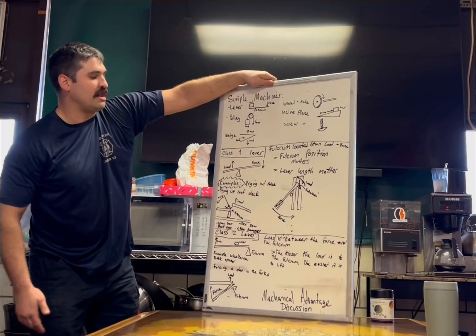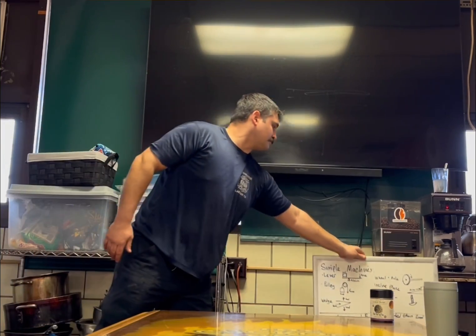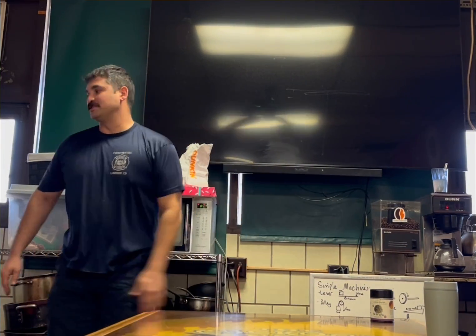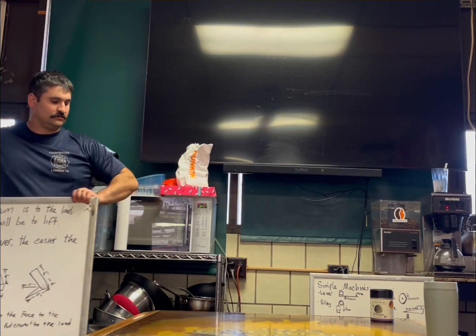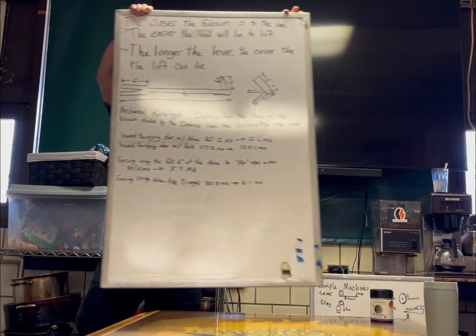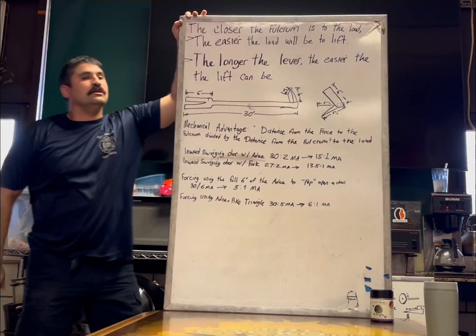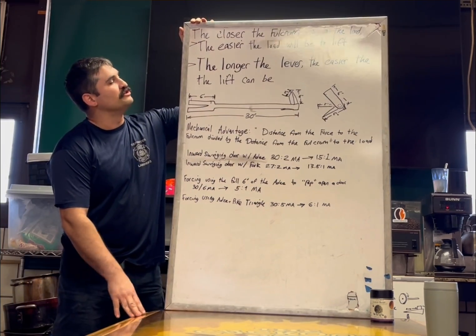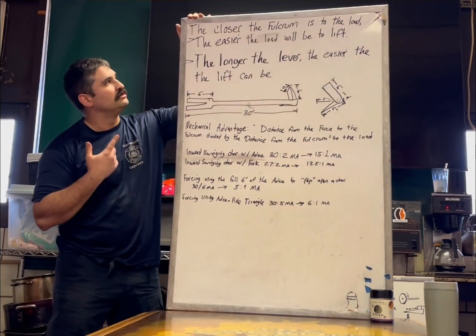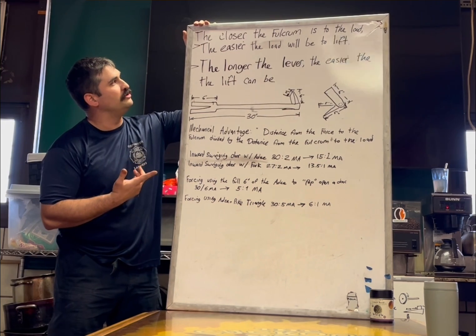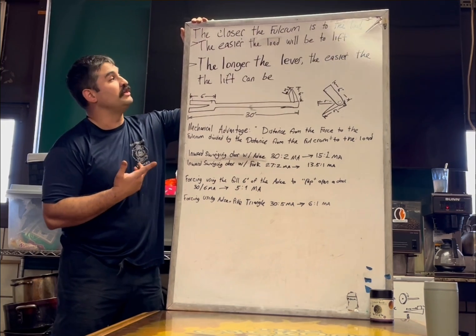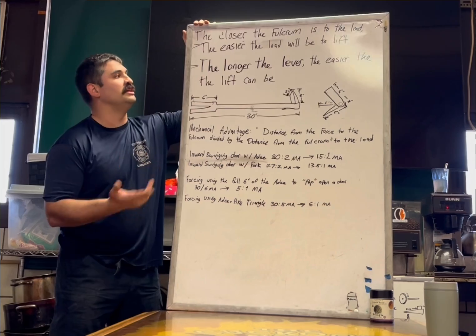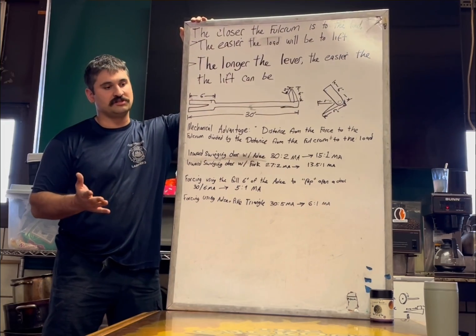Let's talk about mechanical advantage real quick. There's two takeaways from any of this. The closer the fulcrum is to the load, the easier the load will be to lift. And the other takeaway is, the longer the lever, the easier the lift will be. So this is all simple stuff.